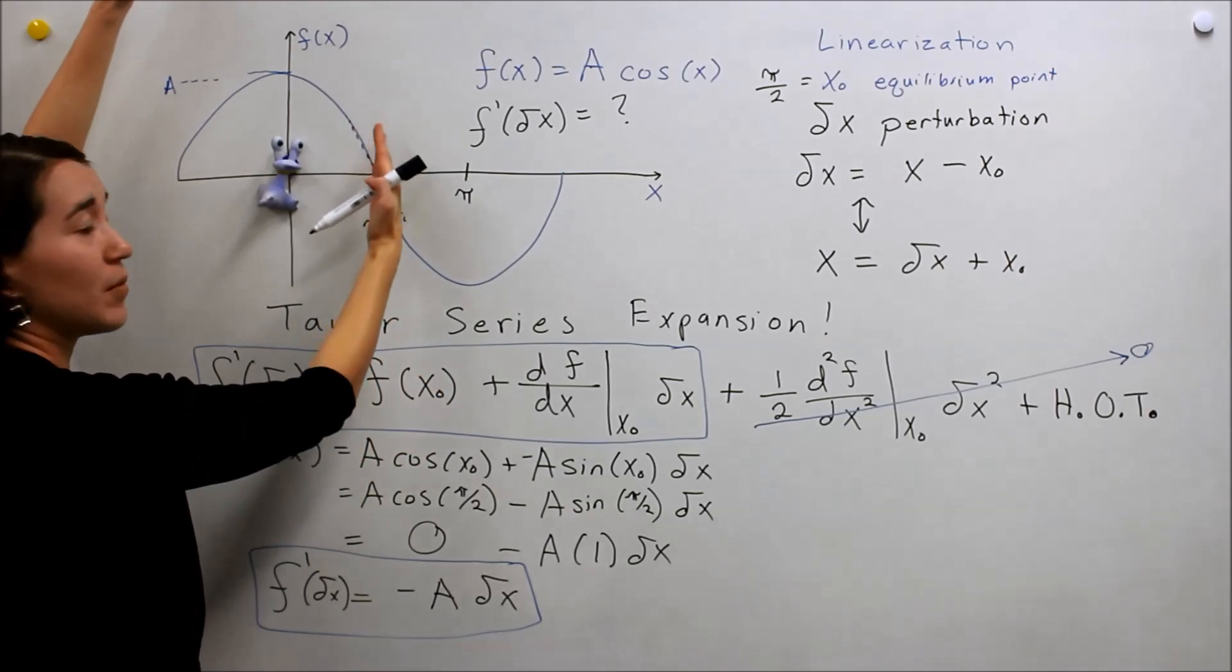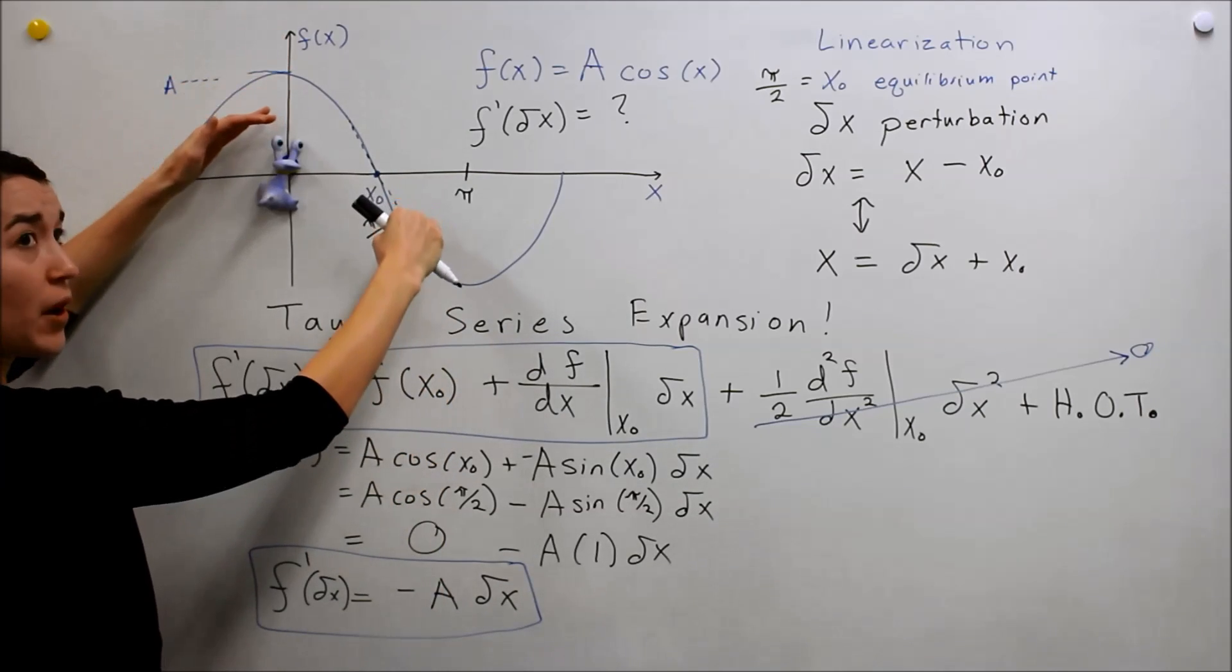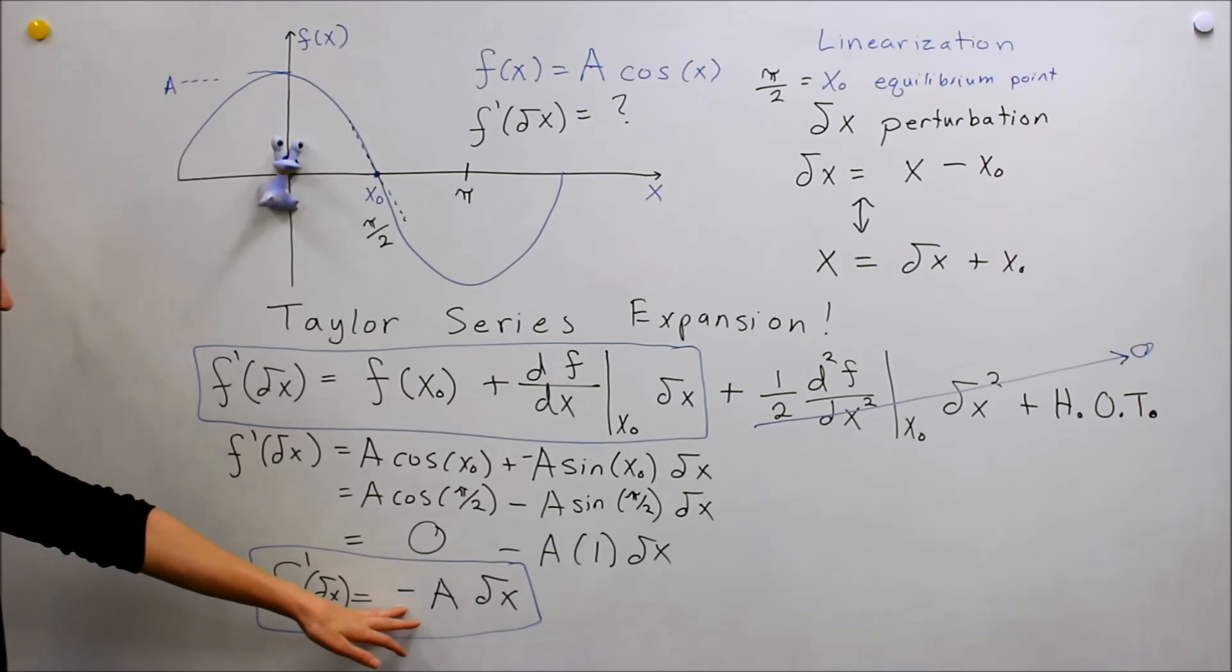And the slope depends on the amplitude here. So if A is very large, this is going to be a steeper slope. And if it's smaller, it will be a less steep slope.